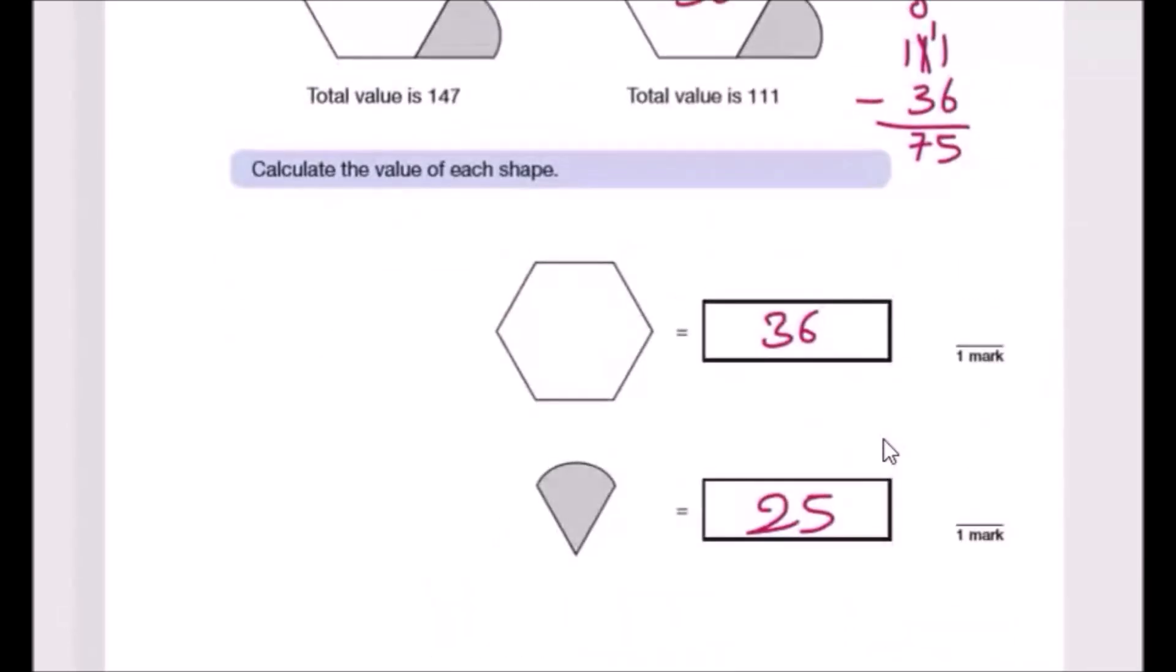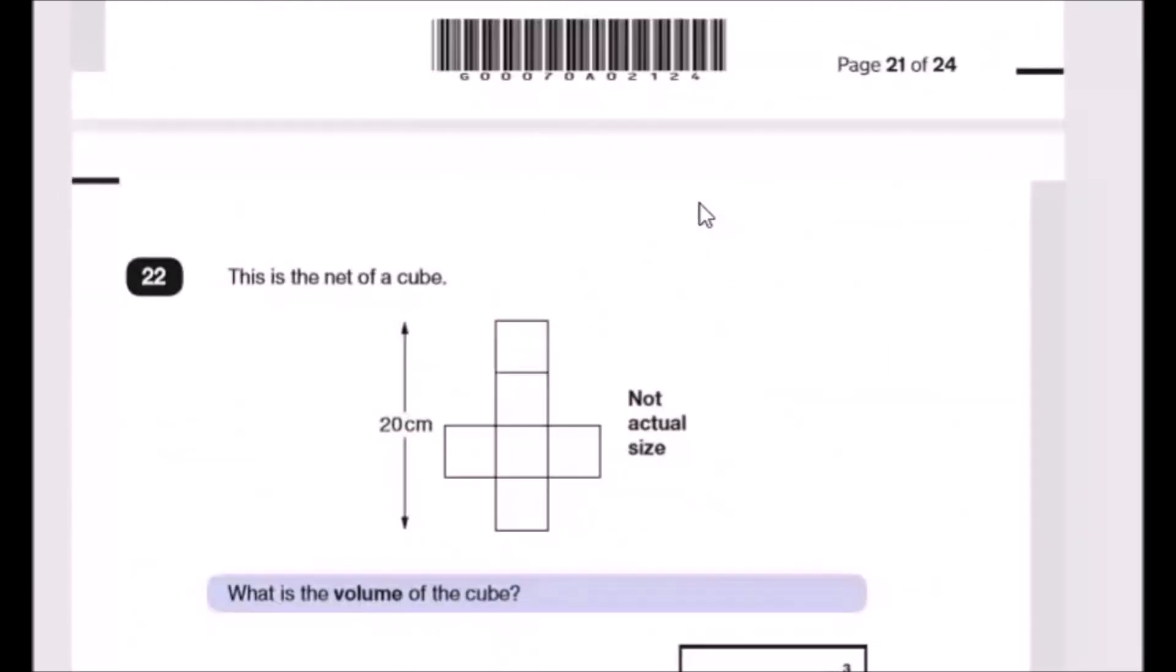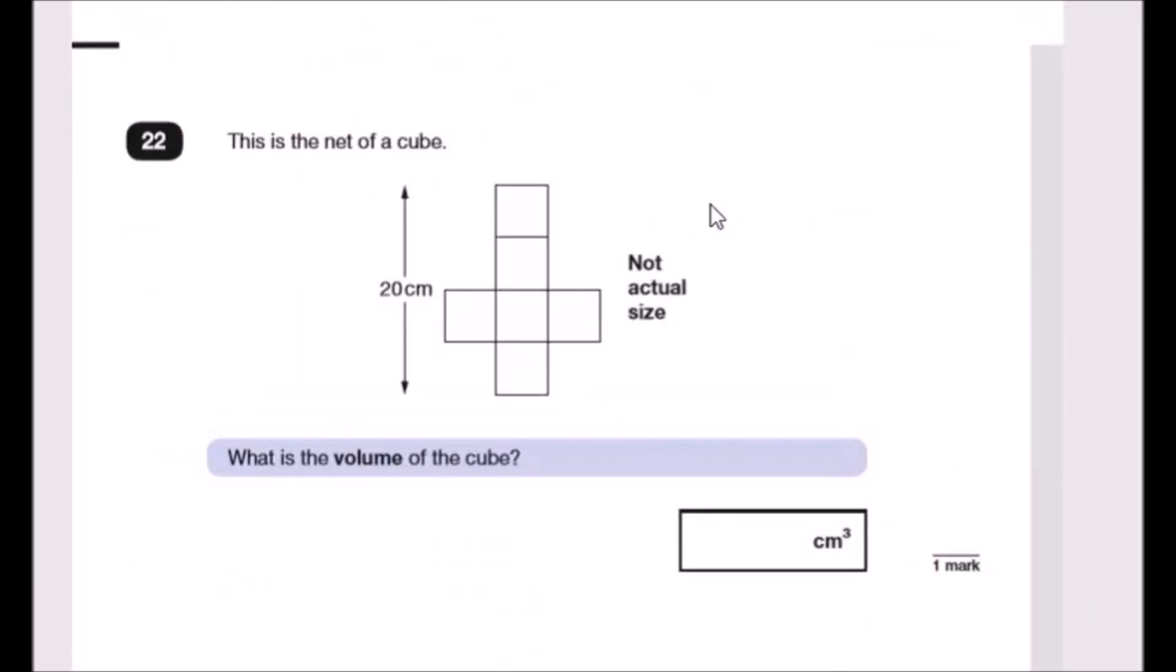That's it, all done. This is kind of like a bit of algebra. You could write this as algebra equations, but that's it. Okay, 22, let's see what's happening here.